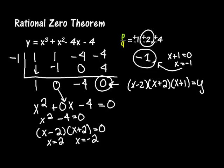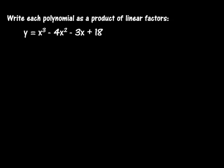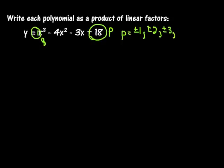Let's try a couple more — write each polynomial as a product of linear factors. We're going to pretend we can't use a calculator. Here p corresponds to 18 and q equals 1. The factors of p — factors of 18 — are plus or minus 1, plus or minus 2, plus or minus 3, plus or minus 6, plus or minus 9, and plus or minus 18. My factors of q are just plus or minus 1. So all of my possible zeros are plus or minus 1, 2, 3, 6, 9, and 18. We need to try all of these to figure out which ones are zeros.